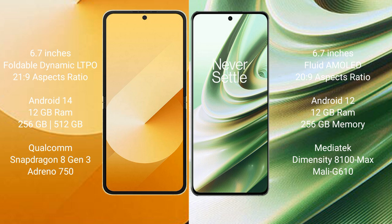The OnePlus 10R comes with 12GB RAM and 256GB internal storage, powered by the MediaTek Dimensity 8100 Max processor.